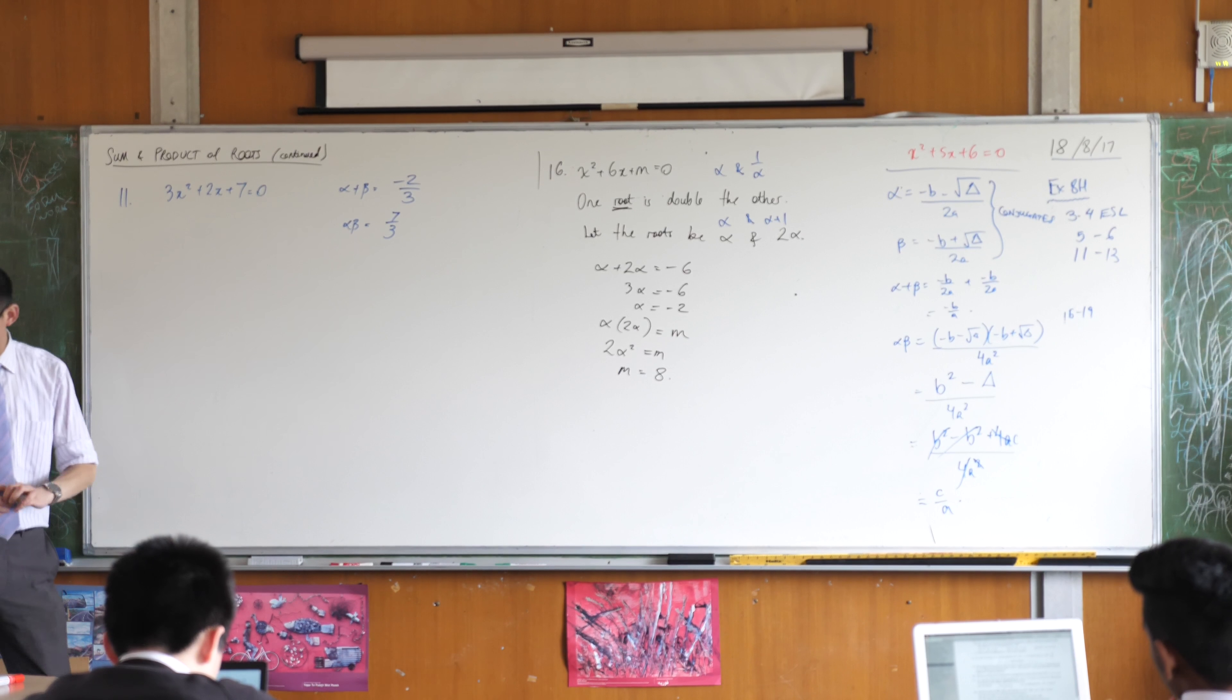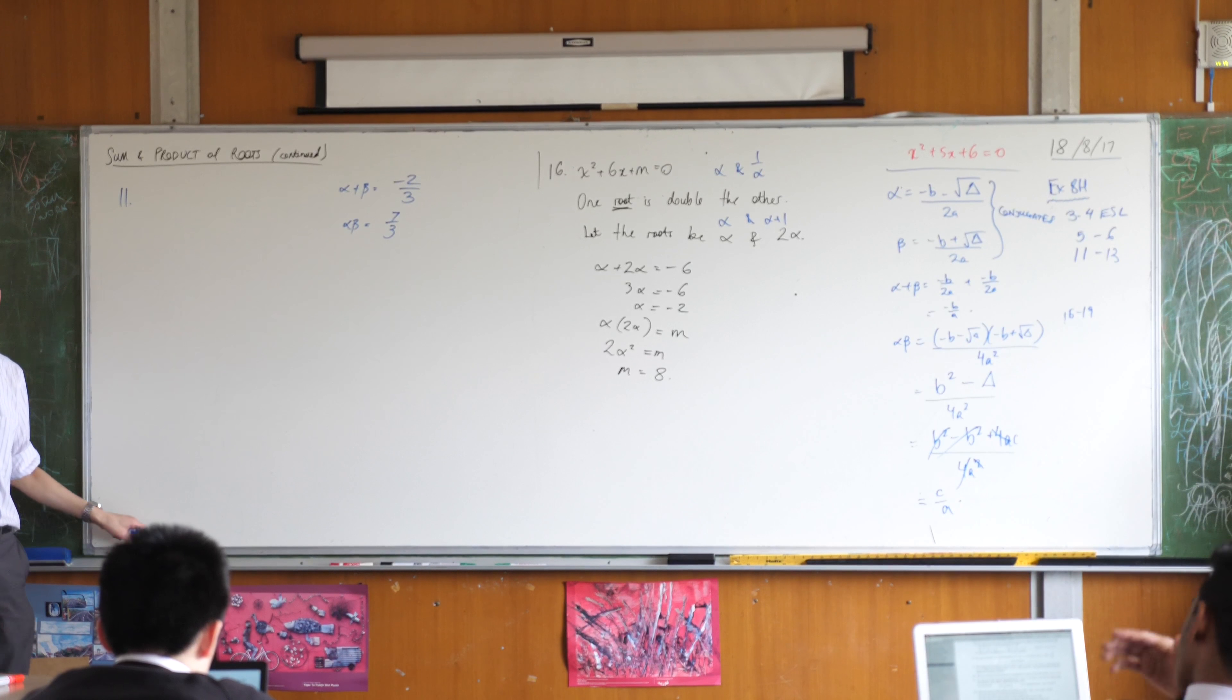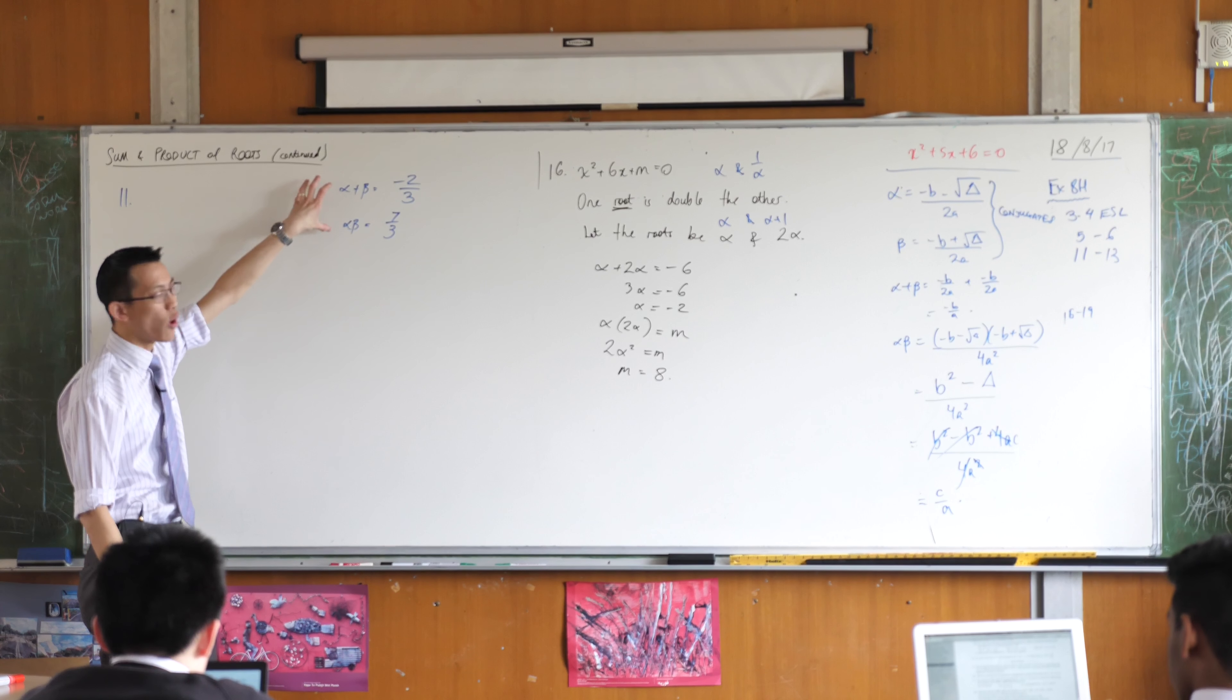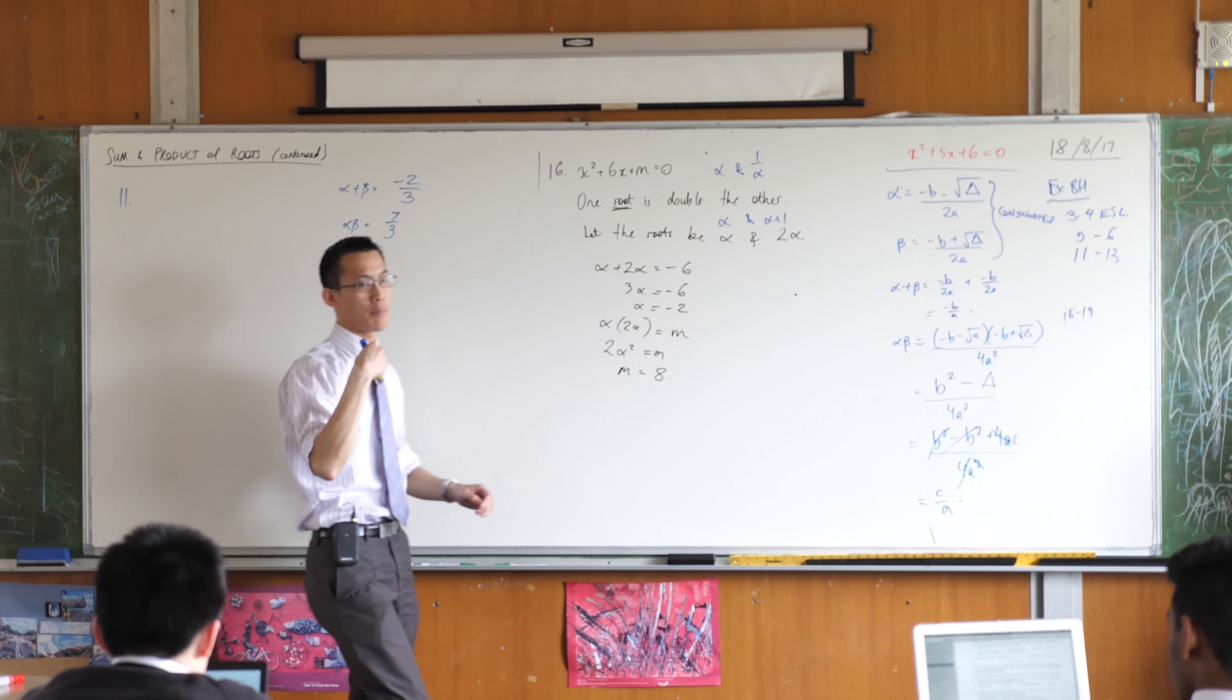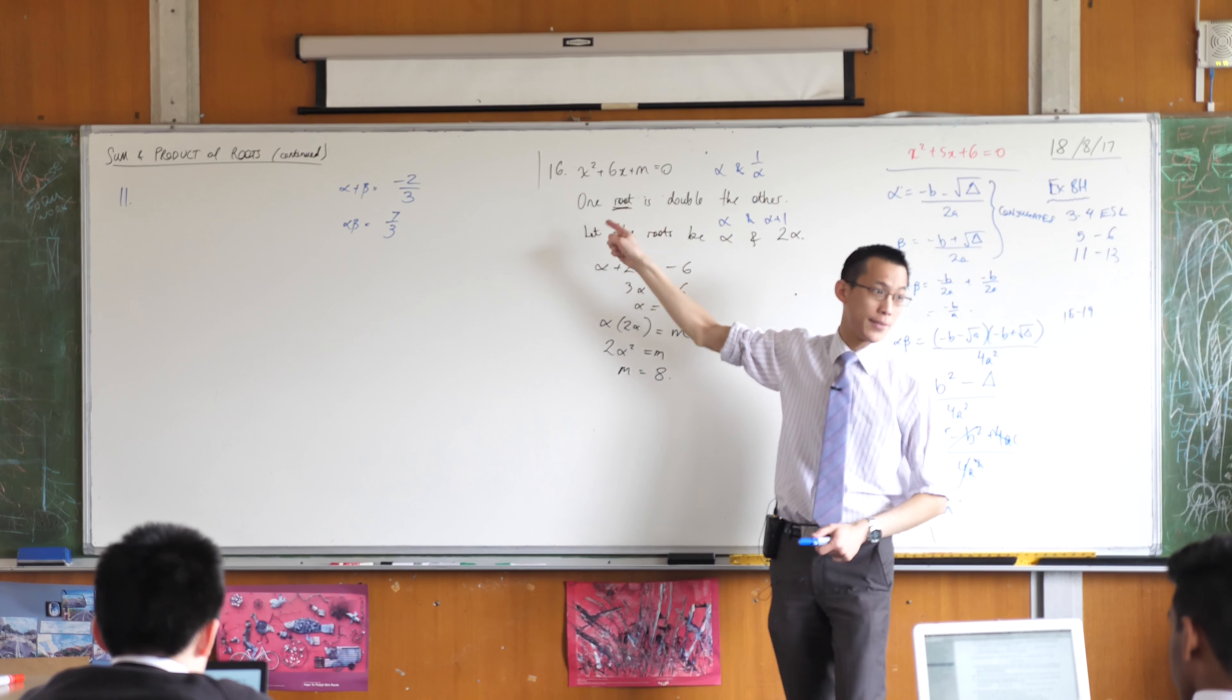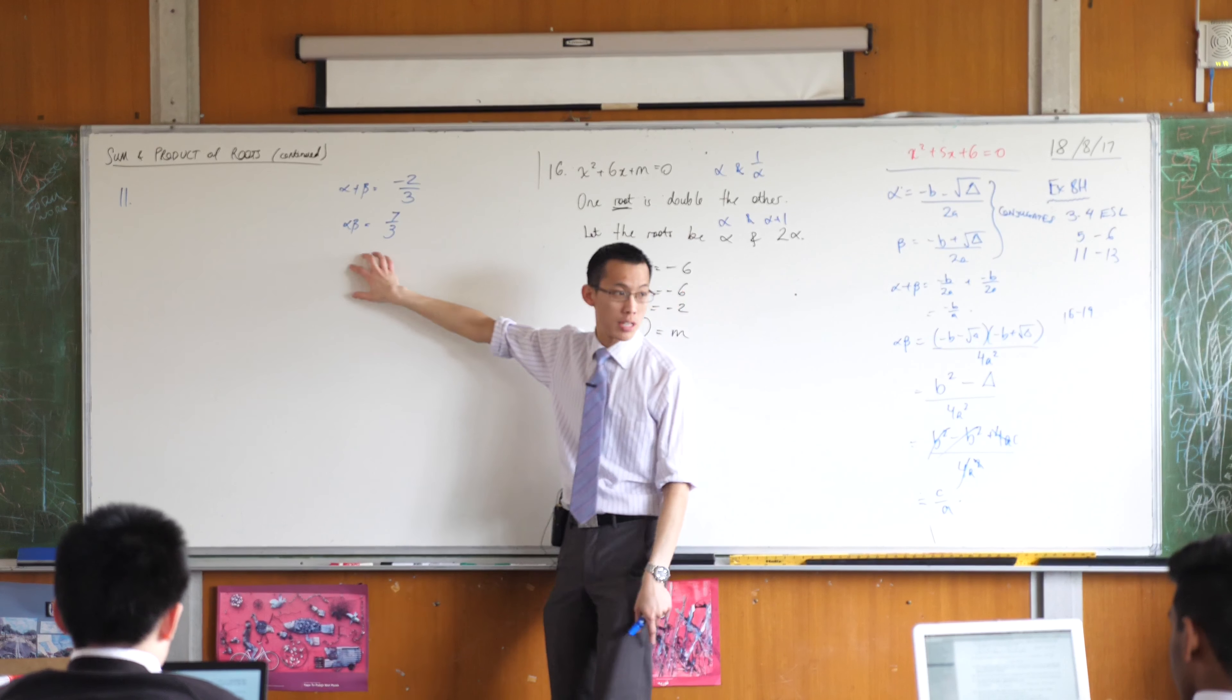Now what I'm going to ask you to do is forget that this quadratic exists because I want to make a new quadratic. However I do know that these things are true and I have to hold on to these because the question that's about to be posed to me is in terms of alphas and betas. Not just any alphas and betas, it's these alphas and betas. So forget about that old quadratic but just hold on to this knowledge.